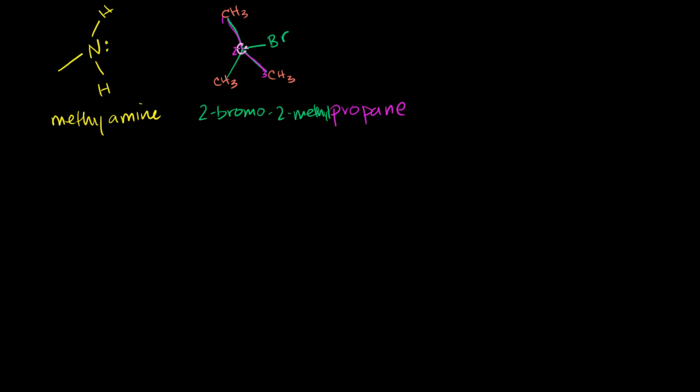But what you can see is because this guy is a tertiary carbon, he is bonded to three other carbons, it would actually be a fairly stable carbocation. So what you could see in step one of this reaction is just the bromine leaves. So if you have just the bromine leaves, then our situation looks like this. You have a tertiary carbocation.